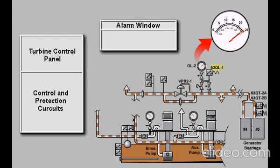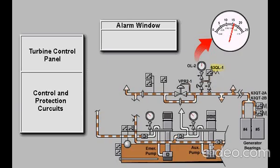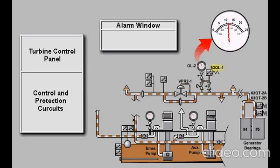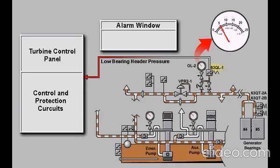Pressure switch 63QT-1 acts as a backup to pressure trip switches 63QT-2A and 2B and will activate the emergency lube oil pump if oil pressure in the bearing header drops below 6 PSI.